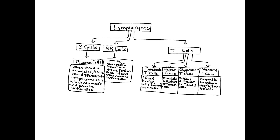B cells produce plasma cells — when stimulated, B cells differentiate into plasma cells which make and secrete antibodies. Natural killer cells provide nonspecific immunity, attacking foreign cells infected with viruses and cancer cells. T cells come in four categories: cytotoxic, which attack virus-infected foreign cells; helper, which stimulate activation of T and B cells; suppressor, which inhibit activation of T and B cells; and memory, which respond to previously encountered antigens.